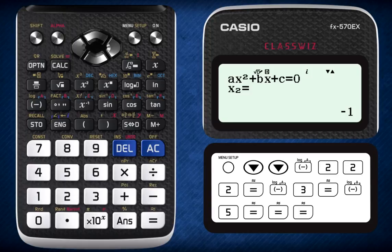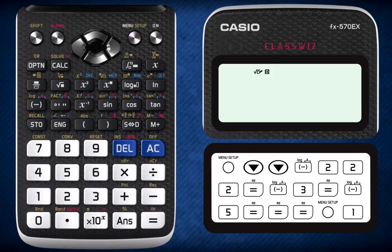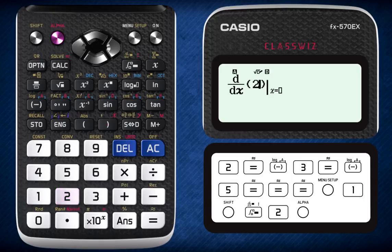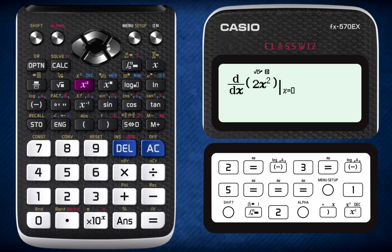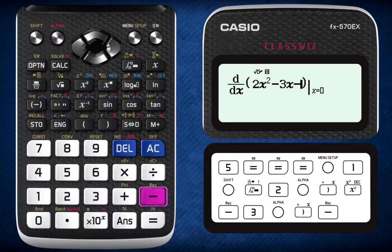To calculate the acceleration, press menu and 1 to return to the calculator mode. Press the shift button followed by the integration button and this gives you the differential solver. Insert the function by pressing 2 alpha close bracket and the x squared button. Then, press negative 3 alpha close bracket followed by negative 5.